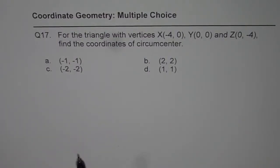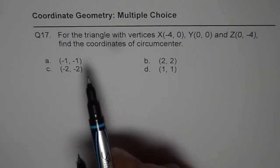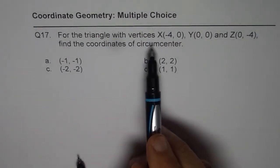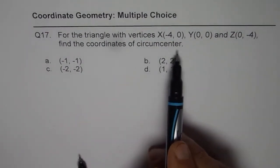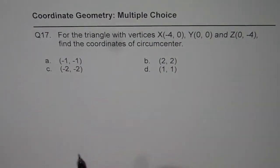Here is question number 17, IB grade 10 coordinate geometry. For the triangle with vertices X, Y, and Z, find the coordinates of circumcenter. Four choices are given to us. You can pause the video and solve the question.